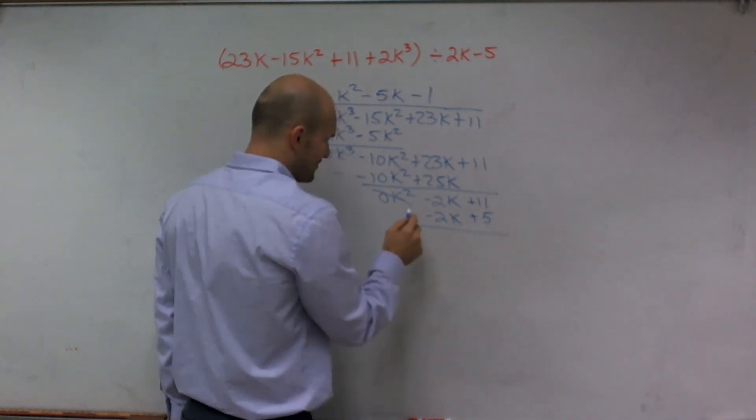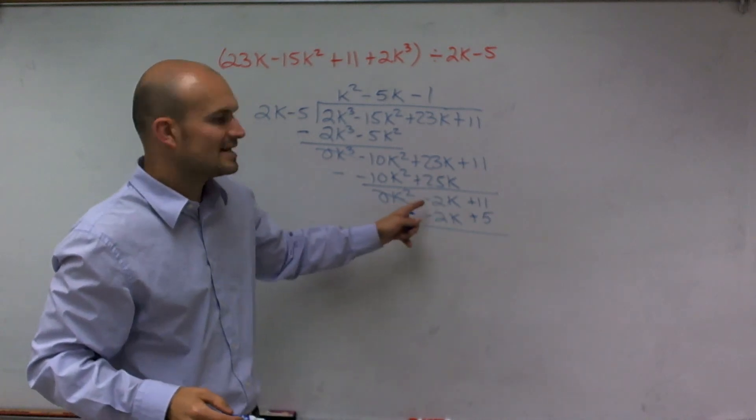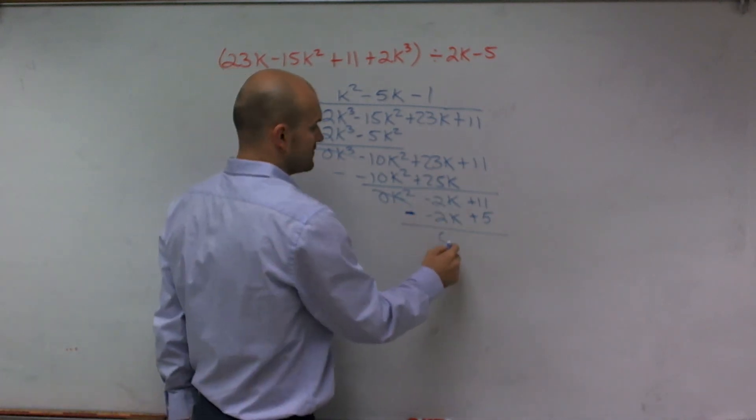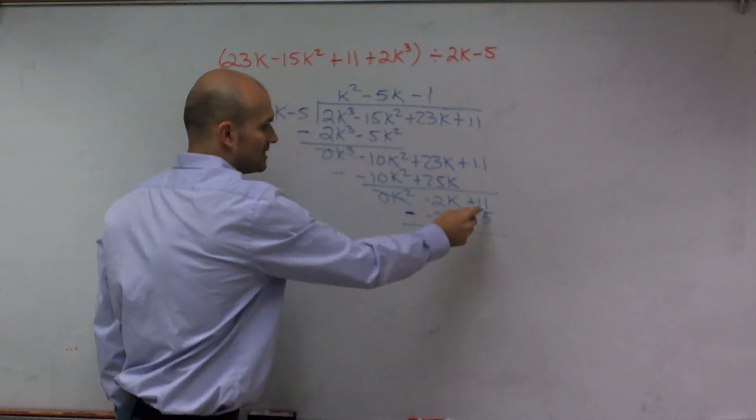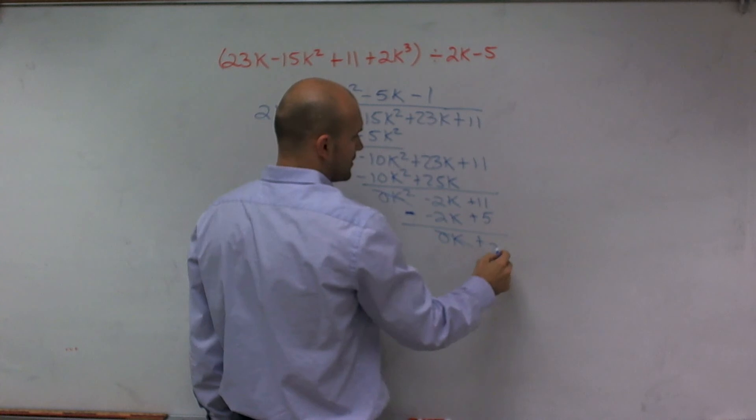Again, last step, subtract our whole rows. So negative 2k minus another negative 2k is going to give you 0k. And then 11 minus 5 is going to give you a positive 6.